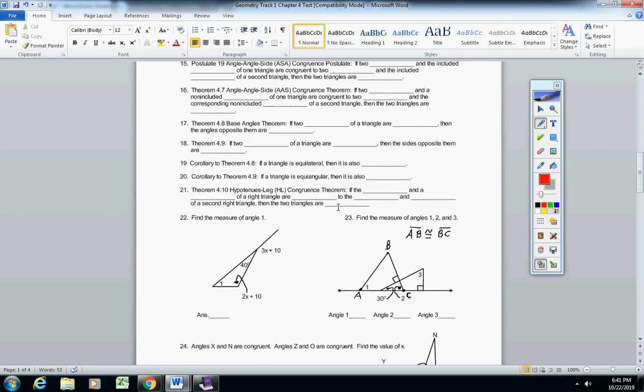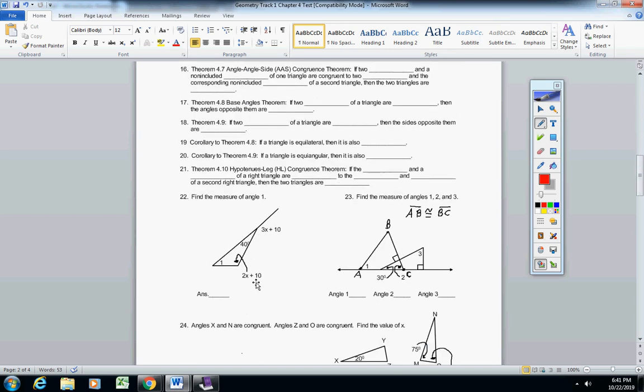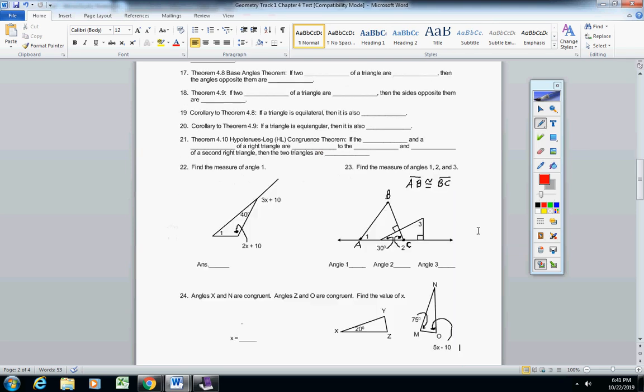And then on 22, find the measure of angle 1. So Macy, I'm not just looking for you to find the measure of X. I want you to find the measure of angle 1 for your final answer. Now you might have to solve for X first—that's fine—but your final goal is to find the measure of angle 1.